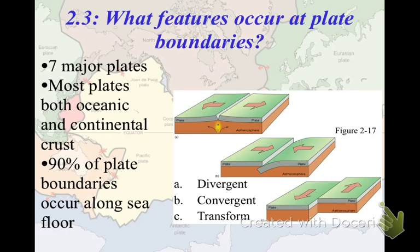Moving forward, we're going to talk about plate boundaries quite a bit. There are seven major plates and eight minor plates. Most plates have both oceanic and continental crust, and almost all plate boundaries occur along the seafloor. The three major types of plate boundaries are divergent, convergent, and transform.